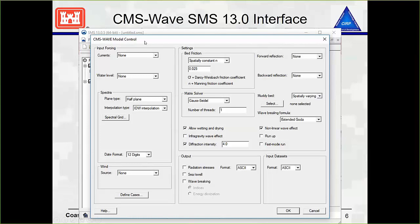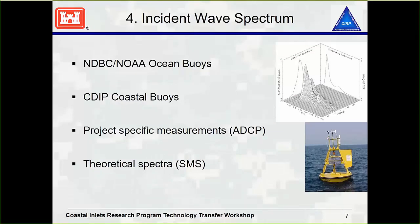A little bit about the interface — this is just the model control. I'm not going to go into detail today because we're going to work on this tomorrow. It's a page where you have pretty much everything that you need to model and set up. Another page I'm going to show you is how you would set up the spectral energy and tie that in here. We can gather that information from buoys, whether it be NOAA, NDPC, or CBIP. You can have gauges out there that contain that information, or you can go into SMS and specify a wave height of, say, one meter with a certain period and other parameters, and it will calculate the spectrum based on that theoretical spectrum.